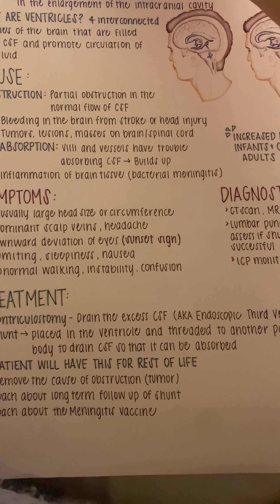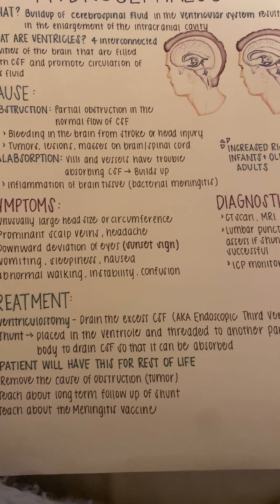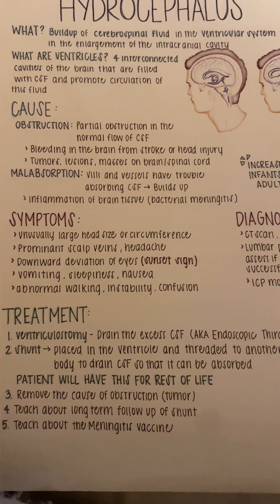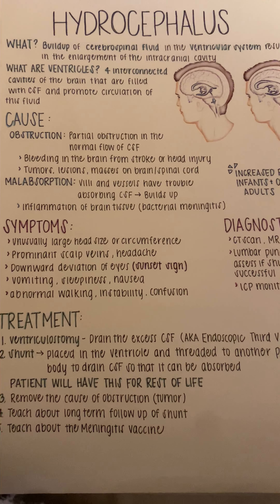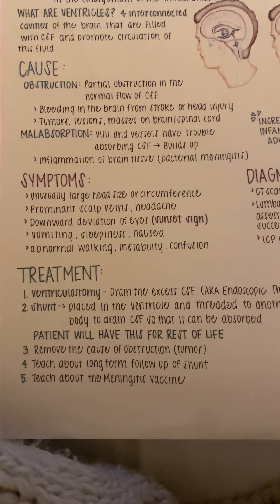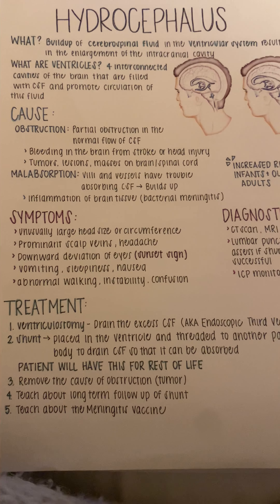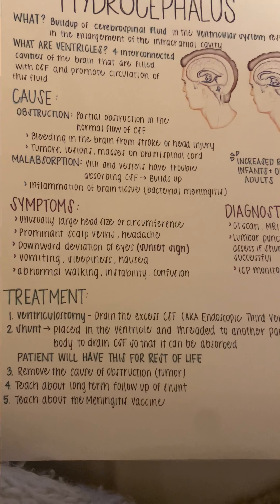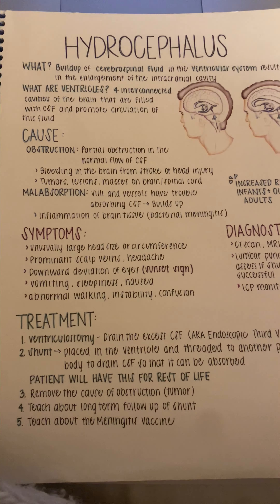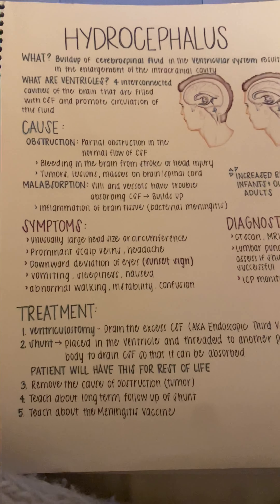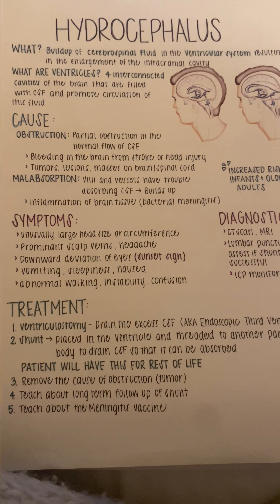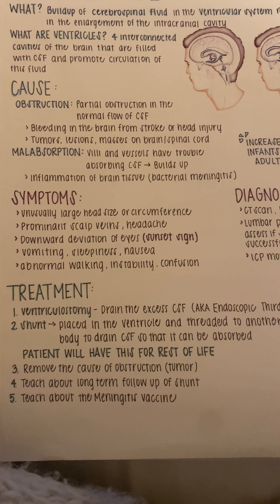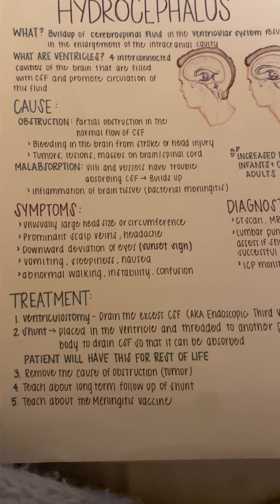Step five is taking actions and performing implementation. These interventions and implementations will be based on nursing knowledge, priorities of care, and planned outcomes. The treatment for hydrocephalus may include preparing a patient to get a ventriculostomy, which is a procedure done to drain excess cerebrospinal fluid. They may also have a shunt placed in the ventricle and threaded to another part of the body to drain the CSF — it's important to note that the patient will have that for the rest of their life. It's also important to teach about long-term shunt follow-up and the meningitis vaccine to prevent infection, as meningitis is a significant risk factor for developing hydrocephalus.